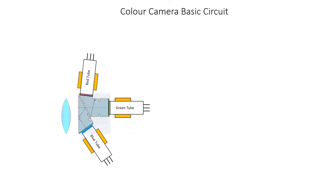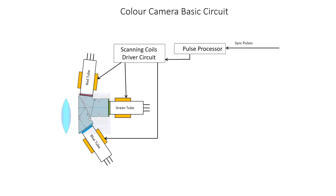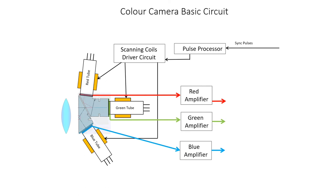The diagram shows a basic color camera circuit. The three pick-up tubes are mechanically fitted to the optical block with high precision. The three tubes are identical but respond to the color parts of them from the optical block. The tubes are scanned as I've described in the previous video. The scanning waveforms are generated in the scanning coil driver circuit which is triggered by a pulse from the pulse processor which in itself is fed from the synchronizing pulse generator based in the studio and via the camera cable.